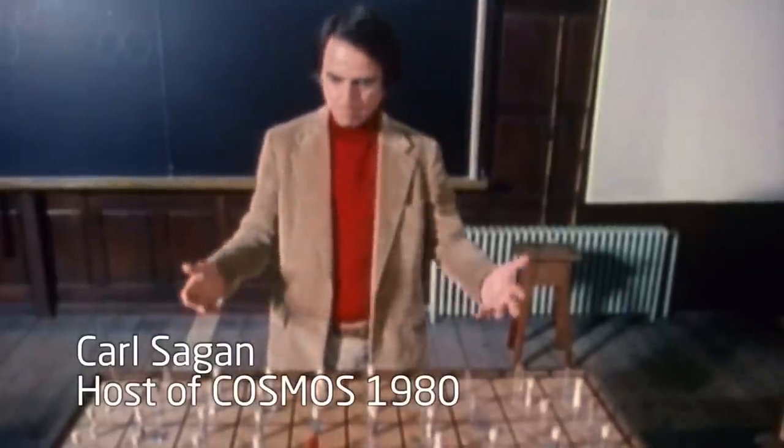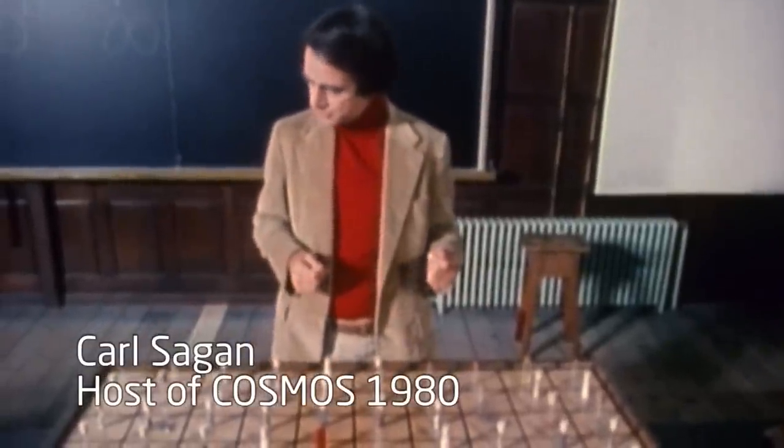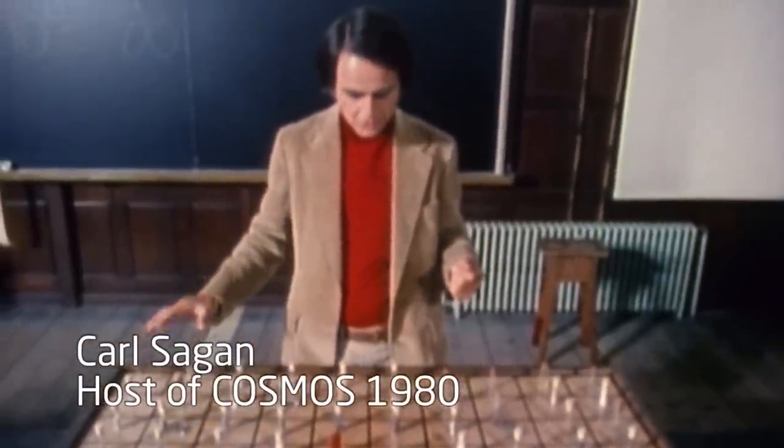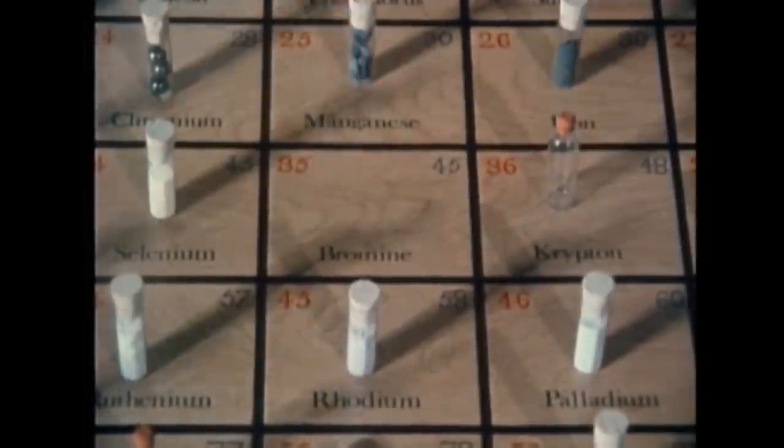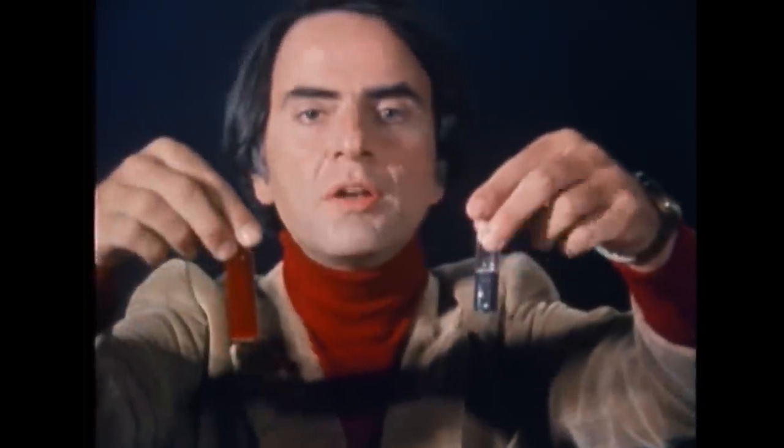At room temperature, many of them are solids, a few are gases, and two of them, bromine and mercury, are liquids.